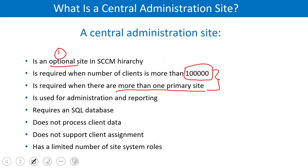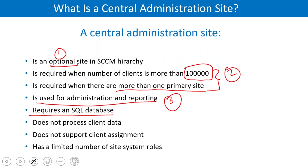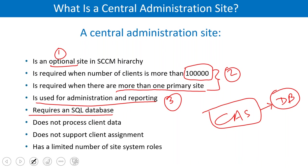The Central Administration Site is used for administration and reporting only — you don't deploy anything or send deployment policies through it. It just collects inventory and sits at the top of the hierarchy. It requires a SQL database to store all its data.